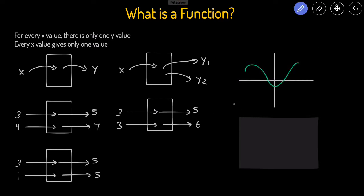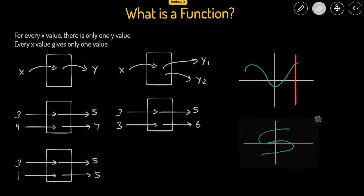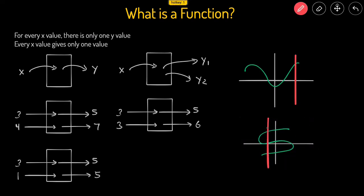Another way that you can determine if something is a function or not, if you're given a graph, is just to use the vertical line test. We draw a vertical line, and the vertical line should only intersect the graph at one place. You can see that as we move it, the red line only crosses the green graph at one point — so that would pass the vertical line test. This would fail the vertical line test: the red line intersects the green graph in three different places, meaning for this one x input we're getting three y outputs, and that would violate the definition of a function.